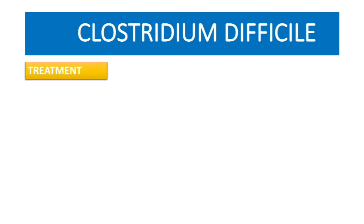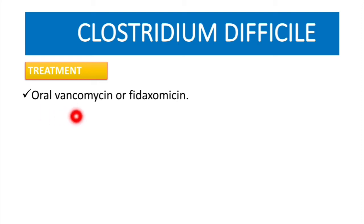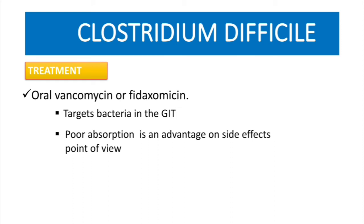For treatment, we use oral vancomycin and sometimes fidaxomicin. Remember, we do not use IV vancomycin — we use oral. This targets the bacteria already in the GI tract. The reason we use oral is because there is poor absorption of the drug, which is actually an advantage from a side-effects standpoint.